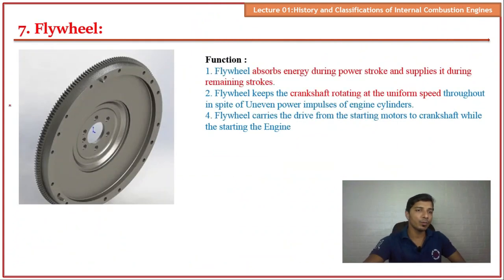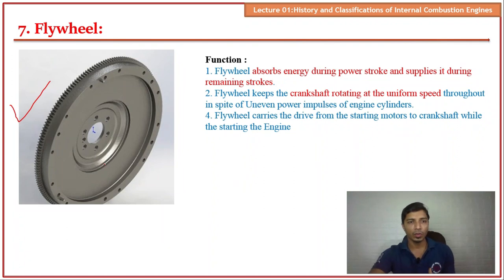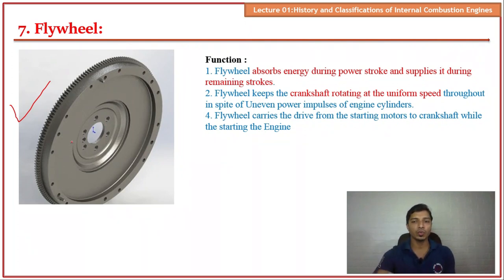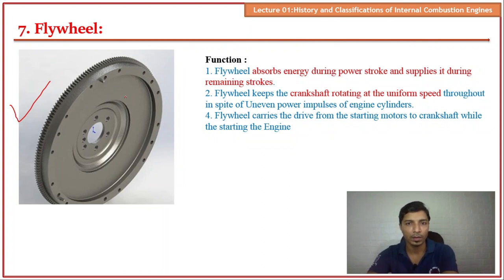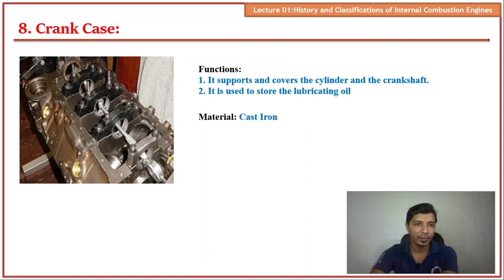The flywheel is very important for the engine. Fluctuations occur during combustion — when combustion suddenly pushes the piston downward, these fluctuations are absorbed by the flywheel. This is why the vehicle appears to run at a steady speed. The flywheel stores energy and releases it to maintain uniform crankshaft speed even under different fluctuations. The material used is cast iron. The crankcase houses the crankshaft and the oil sump, and is made of cast iron.